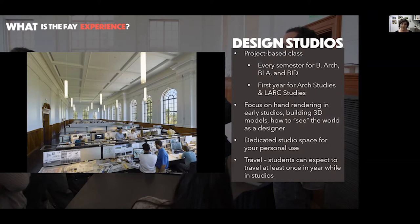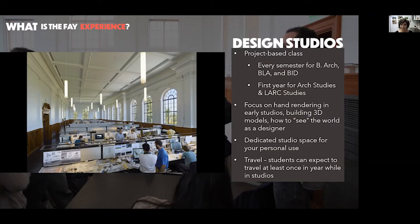In your first year, you might be focusing on things like hand rendering or building 3D models using computer software or by hand. The big focus of the first year is learning how to see the world as a designer — something you won't have tried or practiced coming into the program. So if you're thinking you don't have any history with that, totally fine. You're not expected to come into the Fay Jones School already being an expert in 2D art or physics of buildings. That's what your faculty is for — they're there to teach you what you need to know to be a designer. Studio is a big, complicated part of the Fay Jones experience, and it's really one of the things that sets our programs apart.